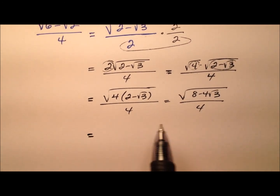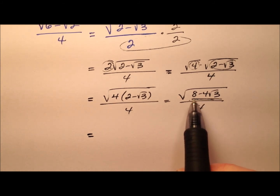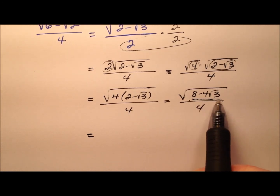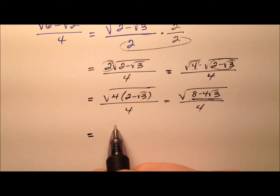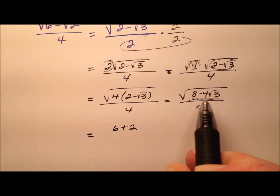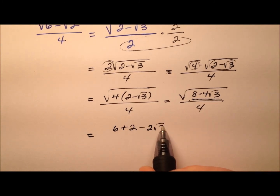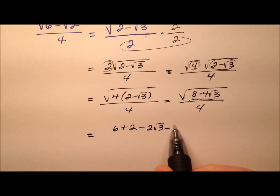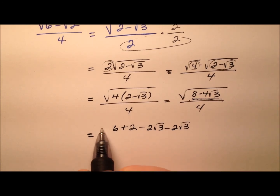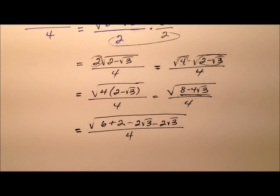So I have the square root of 4 times 2 minus radical 3, all over 4, which gives me the square root of 8 minus 4 radical 3, over 4. Now I'm going to split this up: the 8 turns into 6 plus 2, and the negative 4 radical 3 becomes minus 2 radical 3 minus 2 radical 3 — all of that under a radical, over 4.